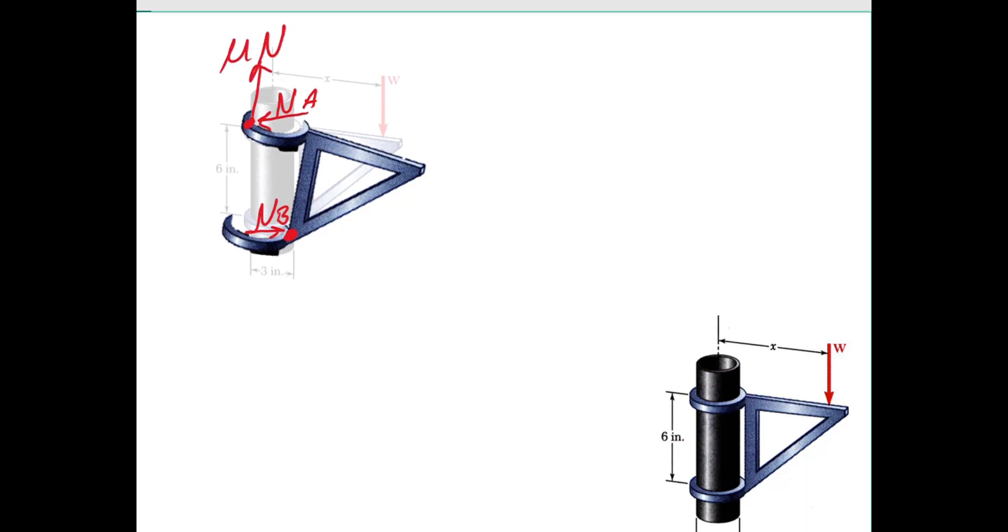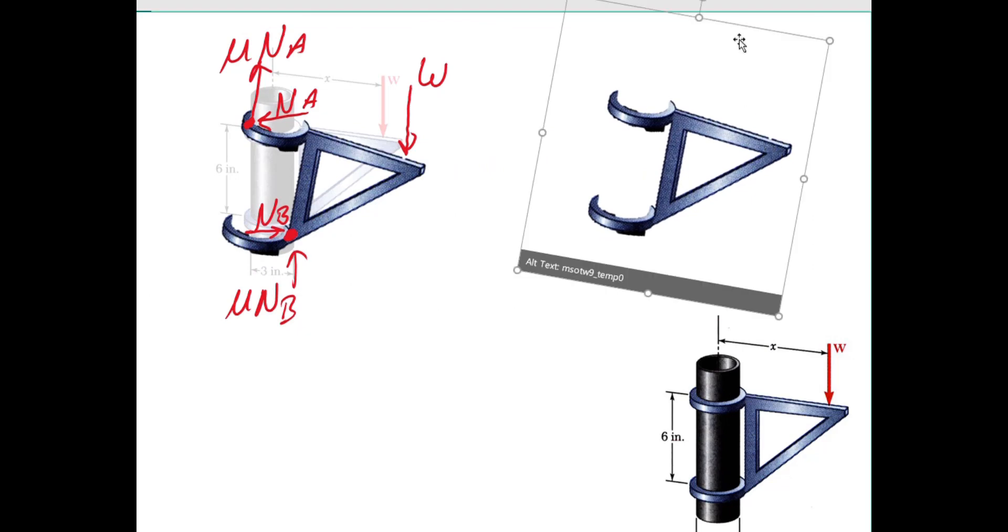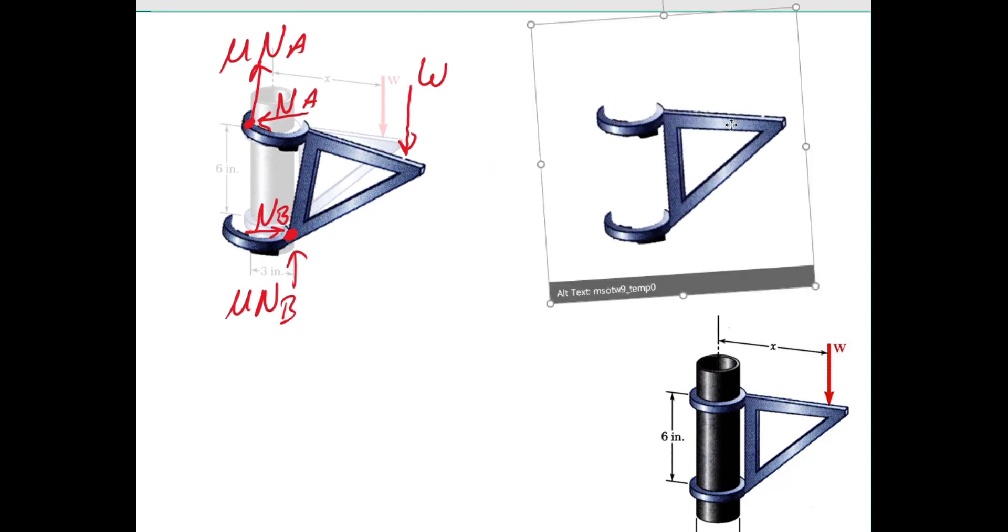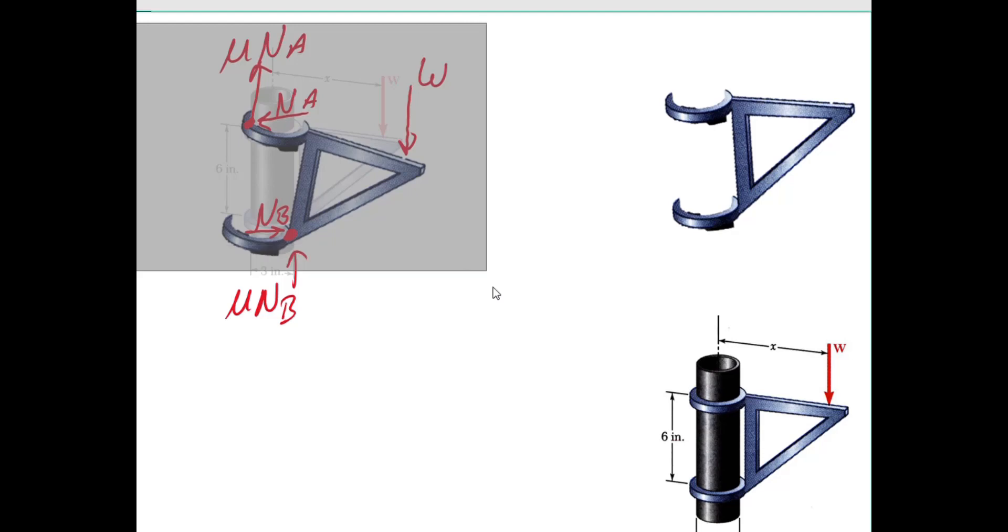So when we draw the free body diagram for this, you have to think about how it's leaning on the pipe and what point is the friction and normal force acting on it. And this will come into play in the future when we look at wheel and axle friction as well.